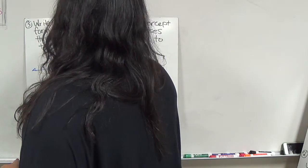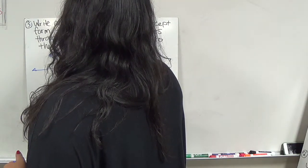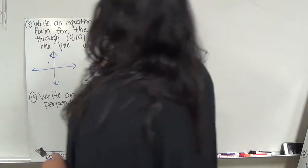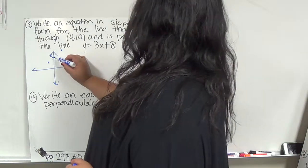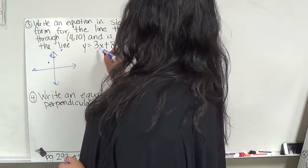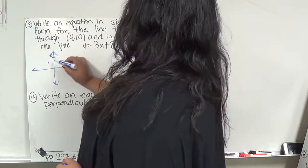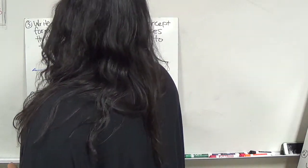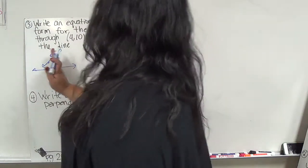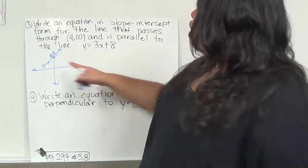Basically what it's asking you is to create an equation that goes through this point, but is parallel to y equals 3x plus 8. Let me illustrate that with you real quick. If this is 8 right here, and you go up 3 over 1, here's the line, y equals 3x plus 8. But what it's saying is, there is this point 4, 10 right here. They want you to find a line that is parallel, so that means it's the same slope, but it goes through this point.